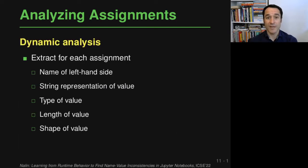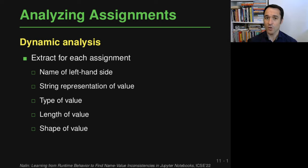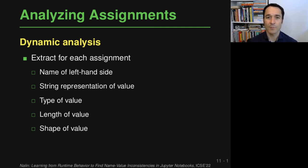The dynamic analysis is a source-to-source instrumentation for Python that adds instrumentation code around every assignment — every place where a name is bound to a value. For each assignment, we extract five pieces of information: the name on the left-hand side; a string representation of the assigned value (since developers commonly look at string representations when logging program state); and three features of values — the type, the length, and the shape.